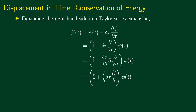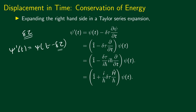Let's now consider an infinitesimal displacement in time, that is, a displacement by an amount delta tau where delta tau is an infinitesimal amount of time. So as before, we must have psi prime of t equal to psi of t minus delta tau. We can now expand this in a Taylor series expansion, retaining only up to the first term. So we have psi prime of t is equal to psi of t minus delta tau times the partial time derivative of psi, which can be written as the identity operator minus delta tau partial time derivative, acting on psi of t.